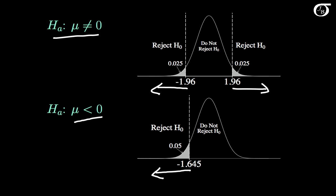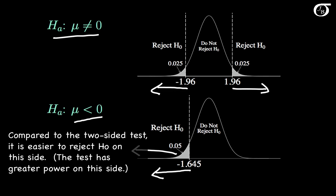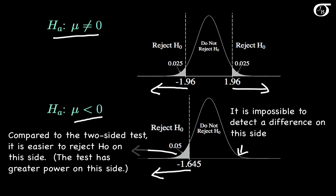So compared to the two-sided alternative, for this one-sided alternative it's going to be easier to reject the null hypothesis on this side. And so our test will have greater power if the population mean is actually less than 0. So we're gaining something, but we have to give something up for that gain — and what we are giving up is any ability to detect a difference on the other side. So if the true mean is greater than 0, we're not going to be able to detect that.